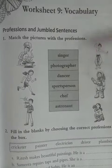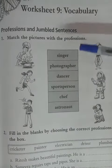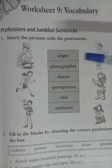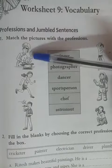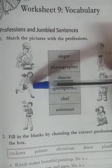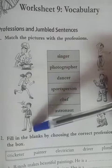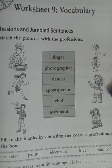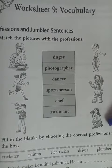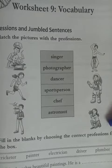Some pictures are here. You have to join them together with the words: Chef, Sportsperson, Singer, Dancer, Astronaut, and Photographer.